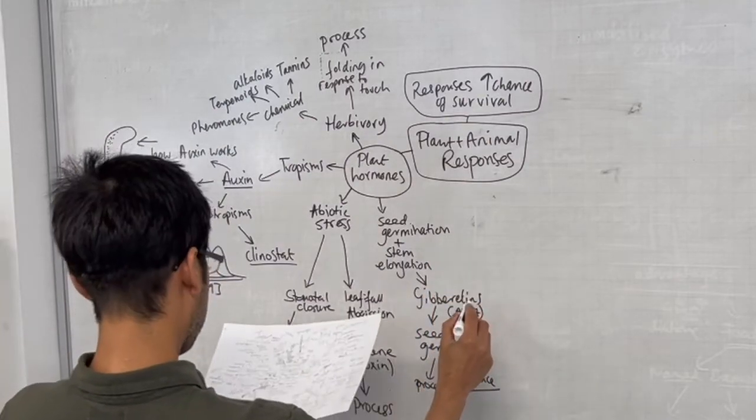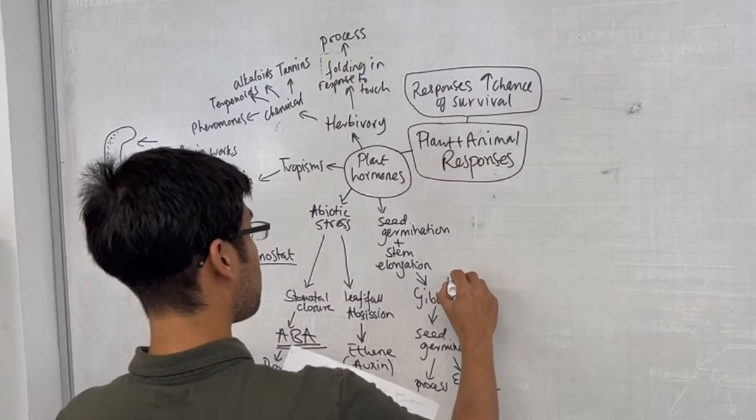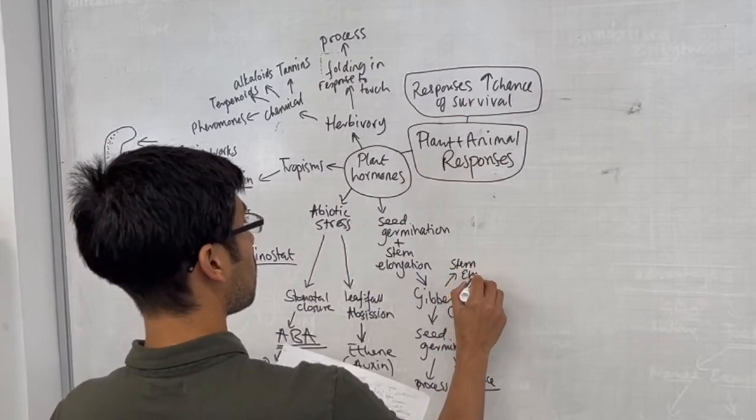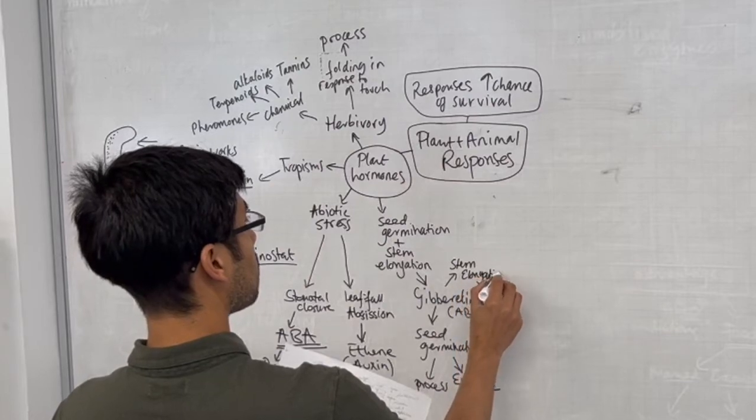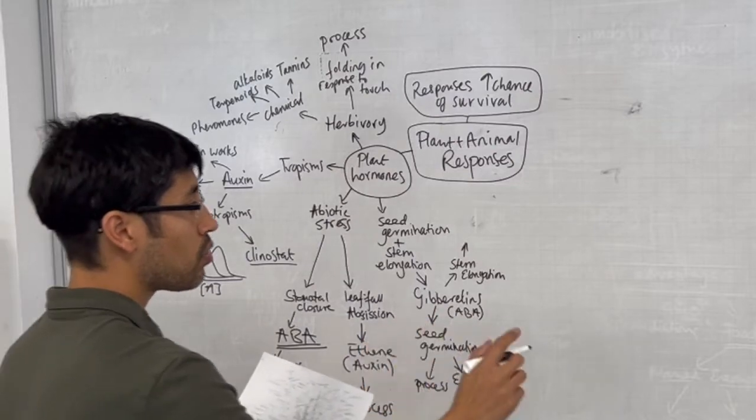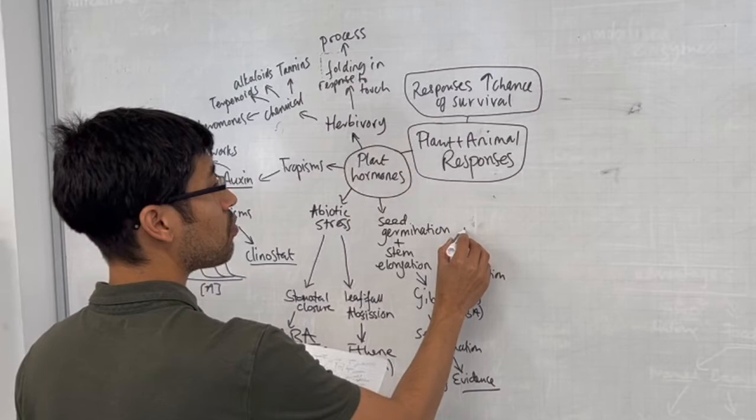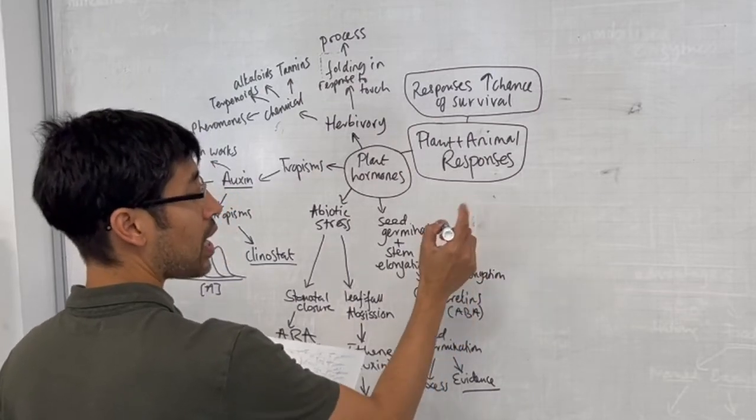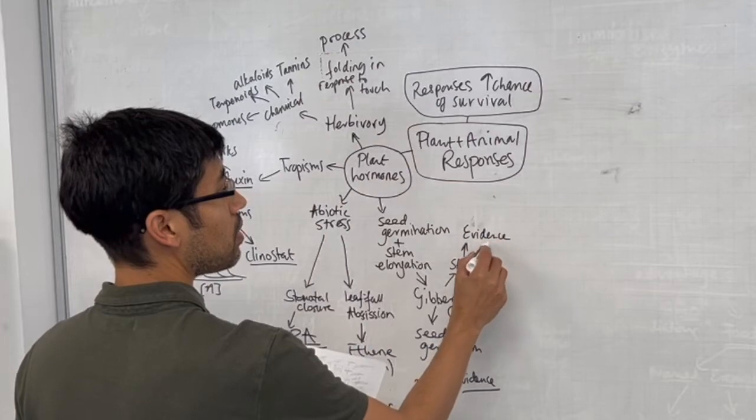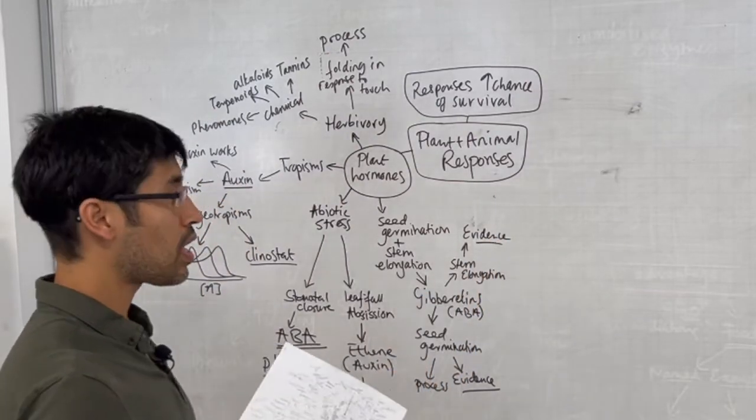Next we have gibberellins also involved in stem elongation. Here I don't believe we need to know the process of how it does that, but we do need to know that it does that. And we need to know what the evidence is that gibberellins are involved in that process.